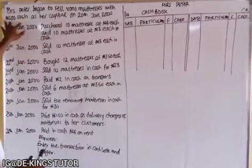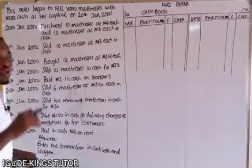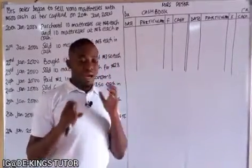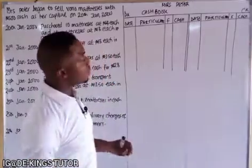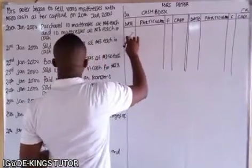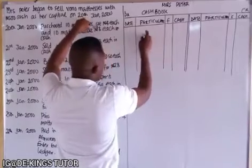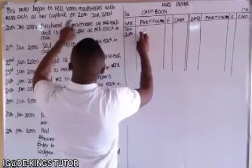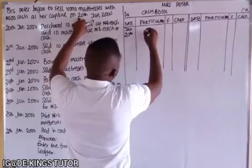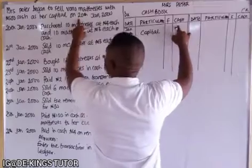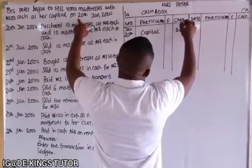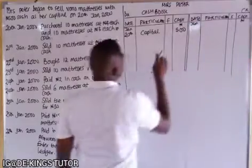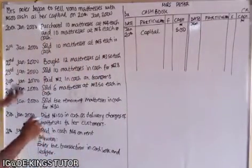Mrs. Peter began to sell Verno mattresses with 500 naira cash as her capital on 20th January. The money used at the start of a business is known as capital. Since capital is what the business receives at the start, it should be debited. So on 20th January, we enter 'capital' in the particulars and 500 naira in the cash column on the debit side.